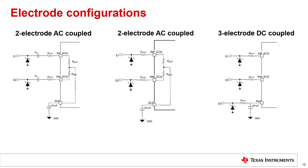The three-electrode configuration overcomes drawbacks of the two-electrode configuration by dispensing with the need for the bias resistors to set the DC bias. In a three-electrode configuration, a pair of electrodes are used for the ECG input and a third electrode is used for the RLD drive. This configuration provides the best drive for the RLD and maximizes suppression of the common mode interference. Also, no extra components are introduced at the input of the ECG signal chain, so the input impedance of the ECG signal chain is not reduced. It is also possible to realize a three-electrode configuration with AC coupled electrodes.